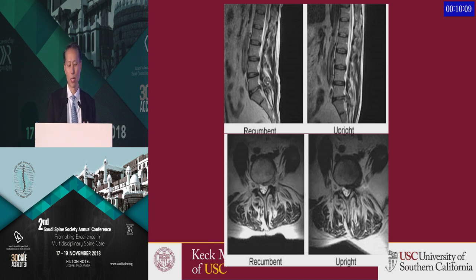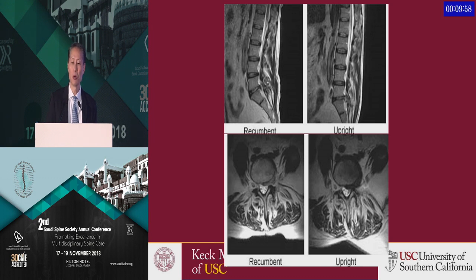Here's a patient with radiculopathy. On the left is the recumbent MRI showing a disc herniation with some nerve compression. But the magnitude of this disc herniation becomes much more impressive when the patient is upright and loading. This might not even require flexion or extension — just loading the spine reveals pathology. Doing flexion-extension imaging gives a better understanding of the biomechanics of the spine.